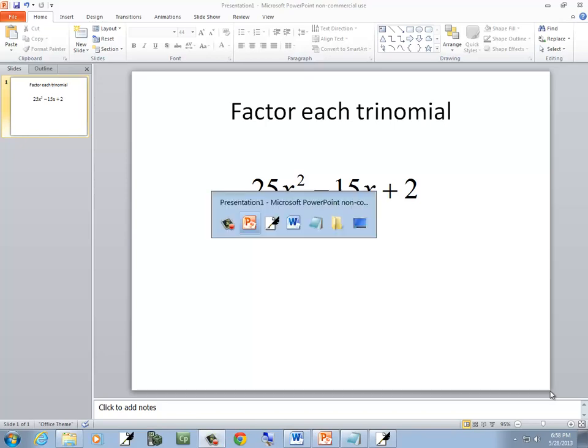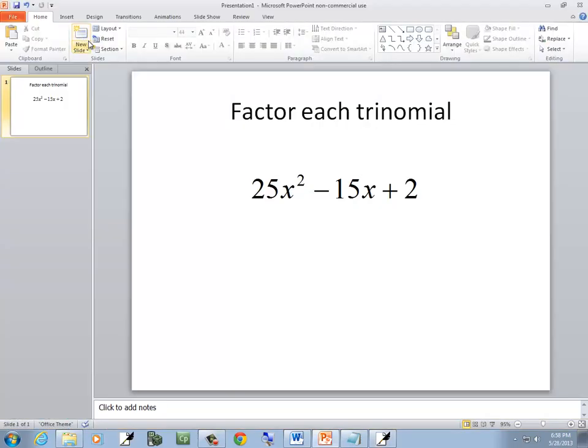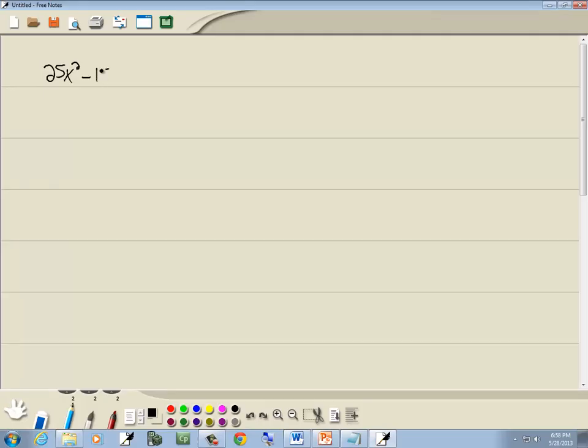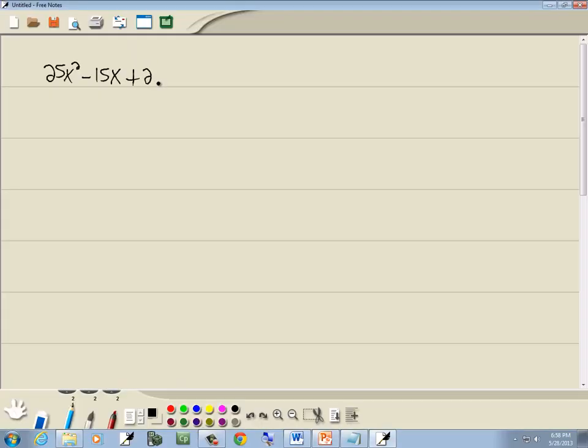Let's take a look at this problem. We have 25x squared minus 15x plus 2 and I want to factor it. Now first off I look to see if they have a GCF and they don't. It's not grouping because I'd have to have four more terms. It's not PST because we've got a number in front of our x squared.